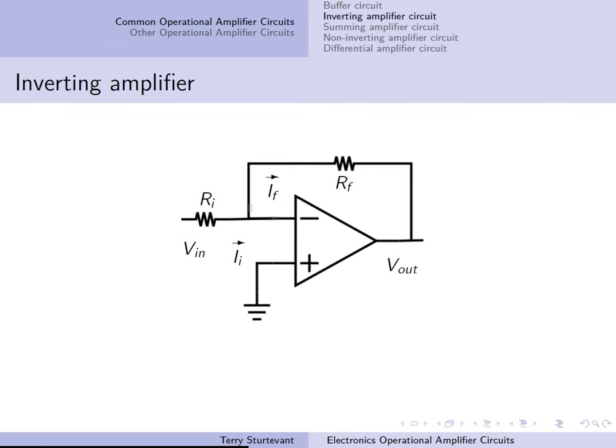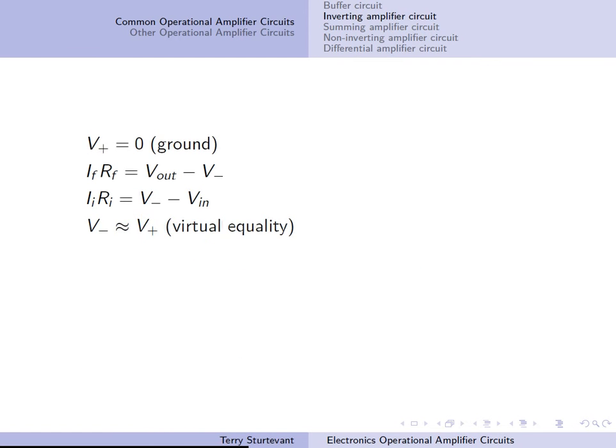The inverting amplifier circuit looks like this, and a lot of circuits are based on this. For the inverting amplifier circuit, the output equals minus RF over RI times VIN. That minus sign indicates that the output is inverted from the input.